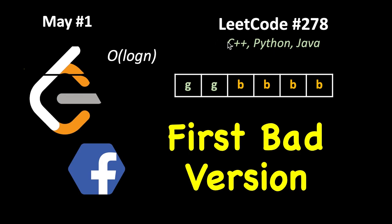First day of the daily LeetCode coding challenge and we are solving LeetCode problem number 278. It's called First Bad Version, and this problem is very similar to a typical binary search with very little variation.